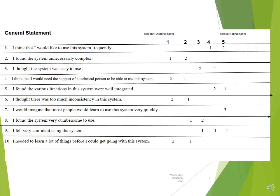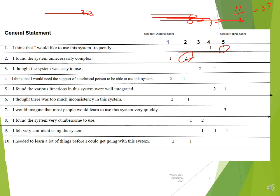Here is another example. For odd questions, 2 users selected 5, so subtract 1 giving 4 each — 2 users gives 8. Plus 1 user selected 4, so 4 minus 1 = 3. Total = 11, divided by 3 users = 3.7. For even questions, 2 users selected 2, so 5 minus 2 = 3 each — giving 6. Plus 1 user selected 1, so 5 minus 1 = 4. Total = 10, divided by 3 = 3.33.